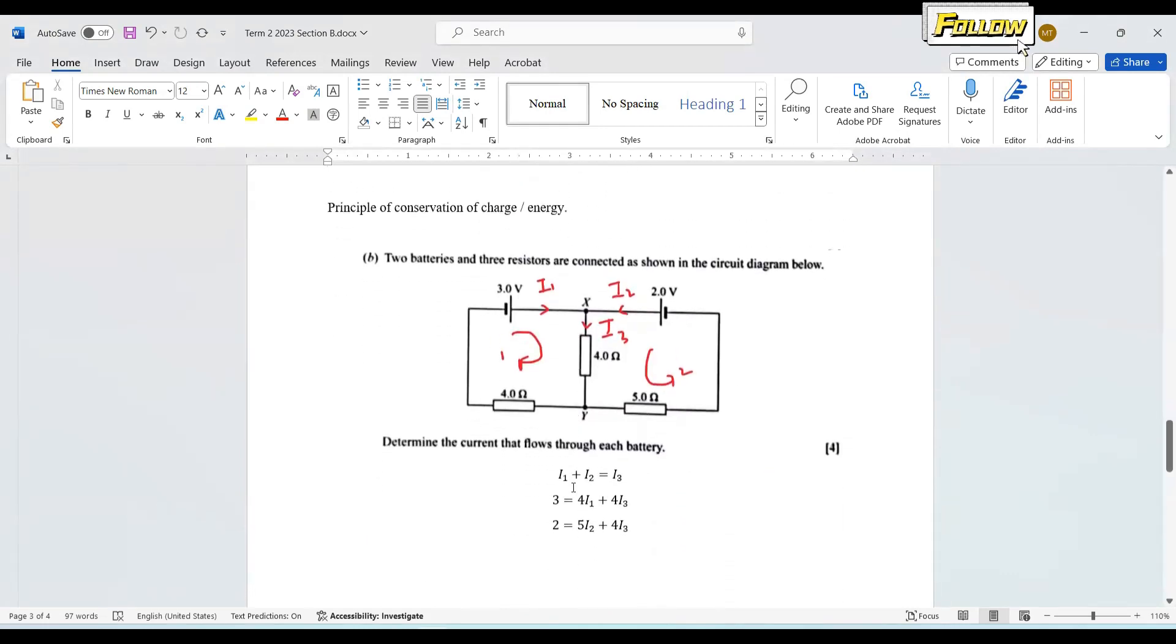So we look at the next question. Two batteries through a resistor are connected as shown in the diagram. Determining the current that flows through each battery. So most of you have done this question when there is a label on the i1, i2, i3. So you can do the label on your own. So this is how we can do it. We have i1 coming up from 3-volt, i2 coming up from 2-volt, and i3 is here. And then we have loop 1, loop 2. So that's how you're going to solve the question.